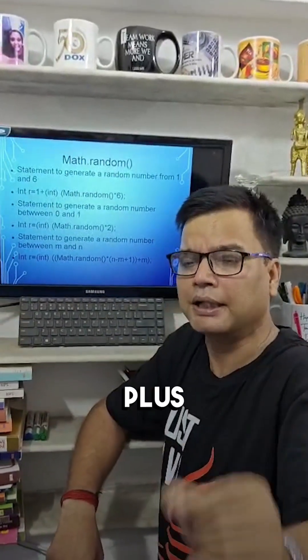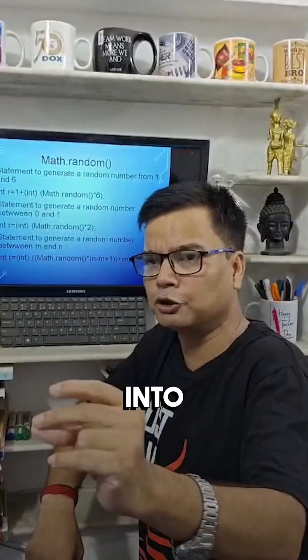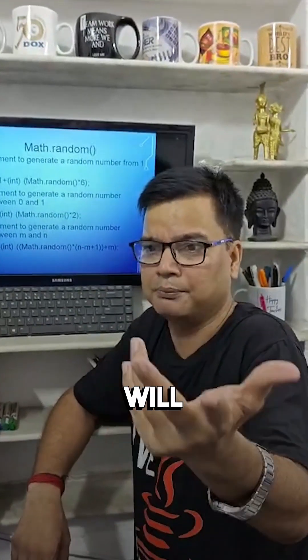Like what we will do? 15 plus int of Math.random into 25 minus 15 plus 1. That is 11. That will be the statement.